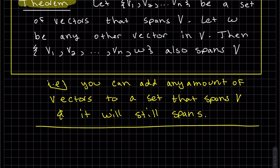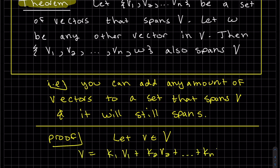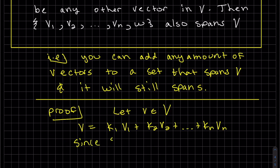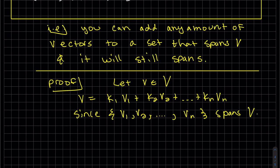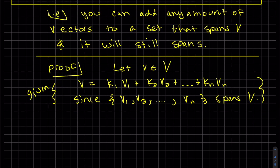I want to prove it. We're going to let v, little v, be in big V, our parent space. So v is any vector. Since my set v1, v2, ... vn spans V, you see that we took any vector and we wrote it as a linear combination of our set that spans.